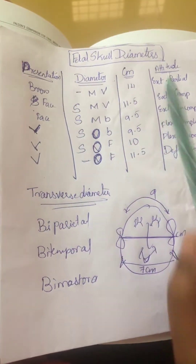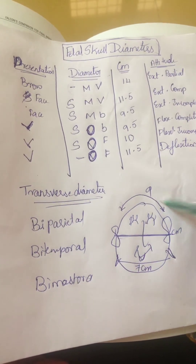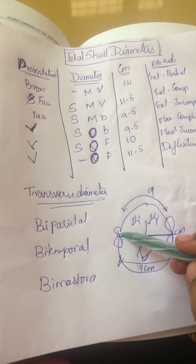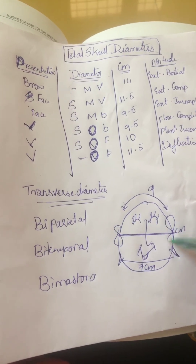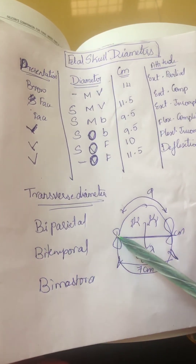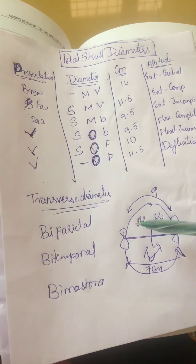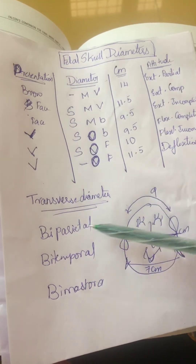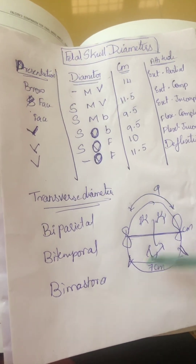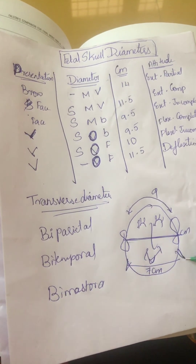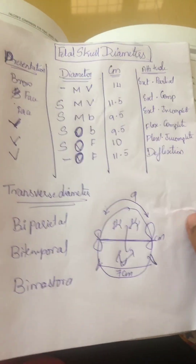These are the fetal skull diameters and transverse diameters. You can see a happy baby face with ears representing 8 centimeters — the bi-temporal diameter, which is the distance between the two temporal bones. Above it is the bi-parietal diameter at 9 centimeters, and below it is the bi-mastoid diameter at 7.5 centimeters.